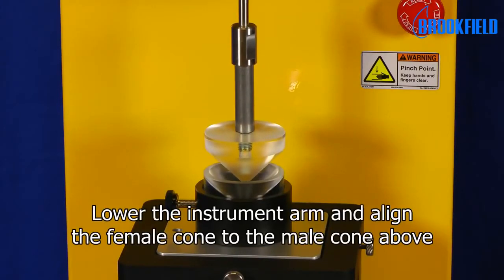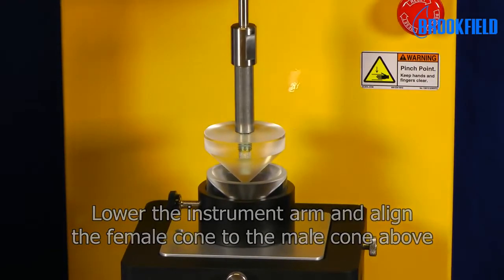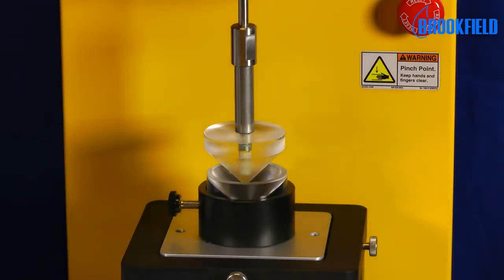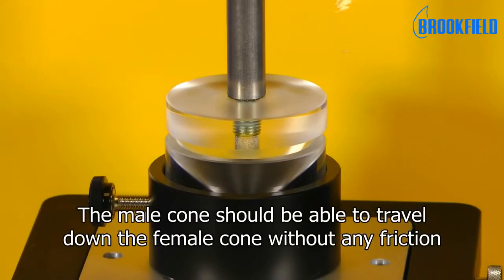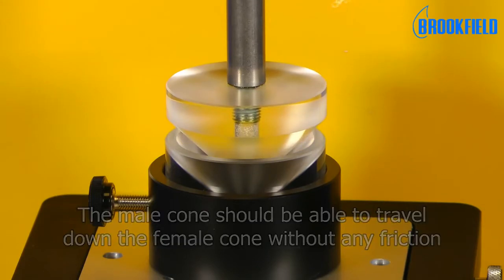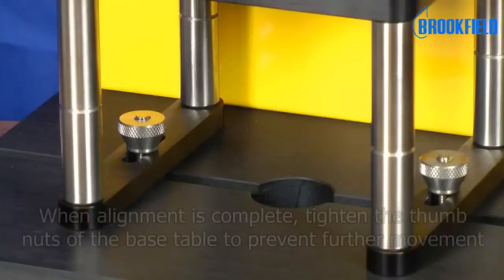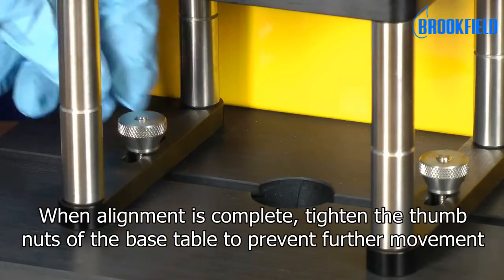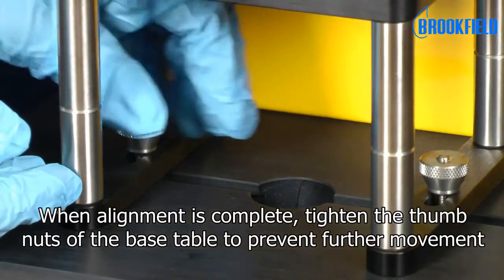Lower the instrument arm and align the female cone to the male cone above. The male cone should be able to travel down the female cone without any friction. When alignment is complete, tighten the thumb nuts of the base table to prevent further movement.